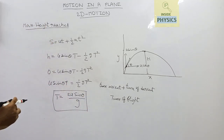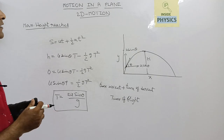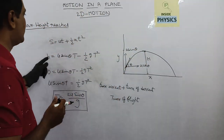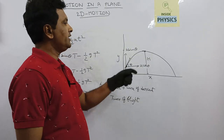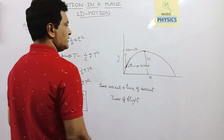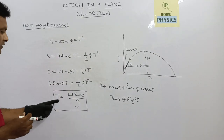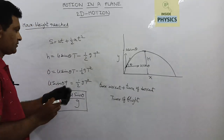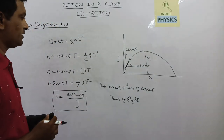The vertical displacement is zero here because the point from where it is projected and the point where it touches the ground are at the same level. So this is the time of flight, and we have seen that time of flight equals time of ascent plus time of descent.